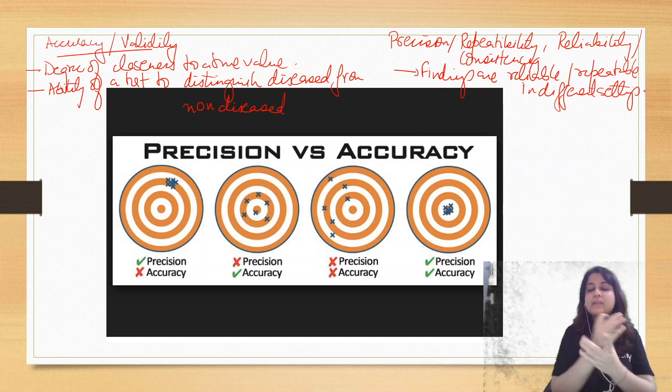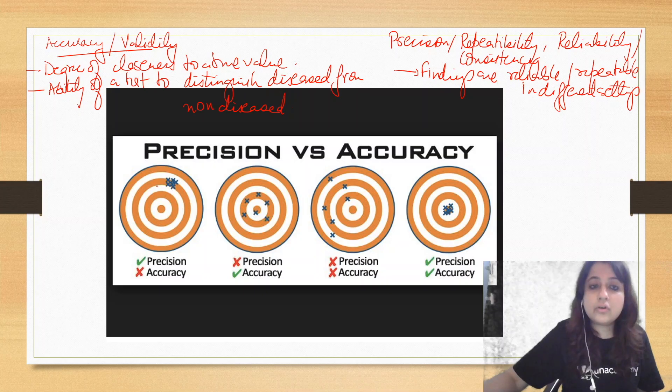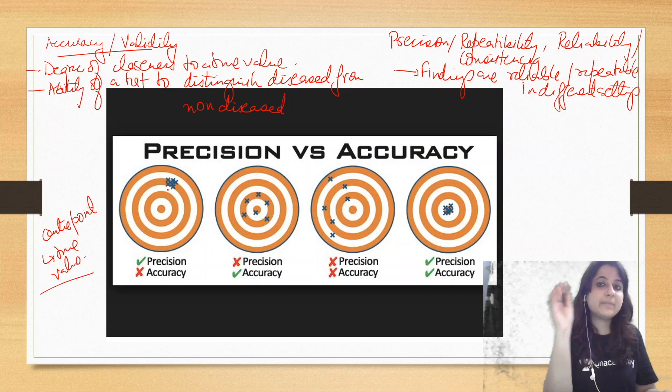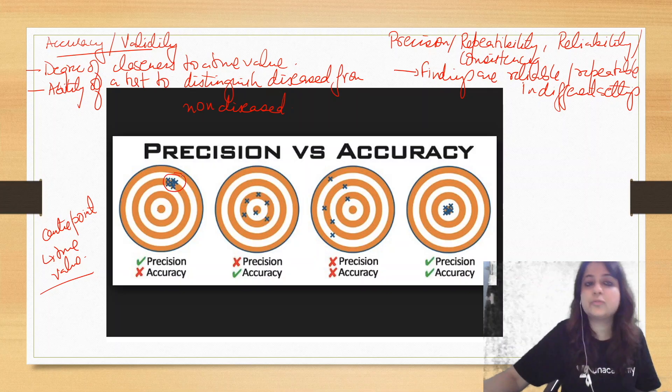Now let's try to understand with the help of this image. So look over here. If you look at the first image, the center point over here, the center point for each of these represents the true value. That's what we have to aim. So if you look at the first diagram, every time that I've hit the dart, it has gone and hit at this point.